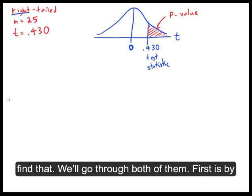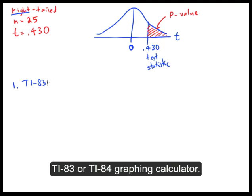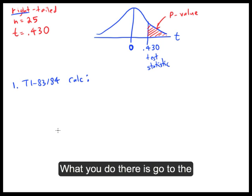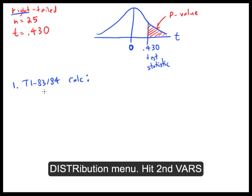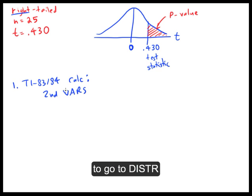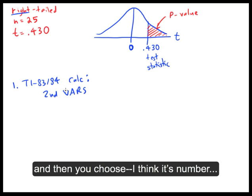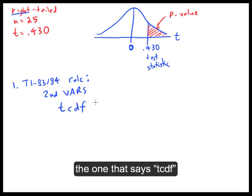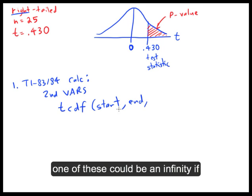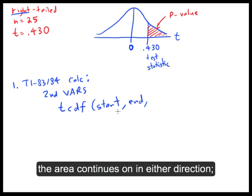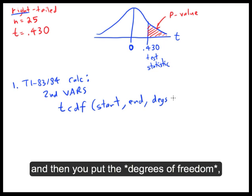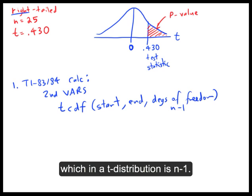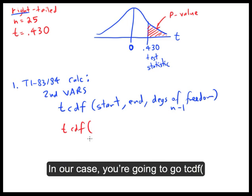There are several different ways you can find that. Let's go through both of them. First is by the TI-83 or 84 graphing calculator. What you do is go to the distribution menu—hit second, vars, to go to distribution. Then you choose number five, which says TCDF. There are three things you put in here: the starting t-score for your area, then the ending t-score (either could be infinity if the area continues on in that direction), and then the degrees of freedom,